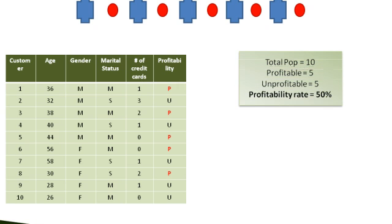In the existing customer base, 5 of the customers are profitable, and 5 are unprofitable. Hence, the profitability rate of the total customer base is 50%. Now, let us partition the data into two segments based on the age variable. Let us put those who are 35 and above in the left segment, and those below 35 in the right segment.